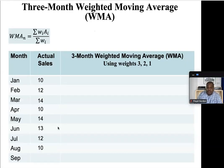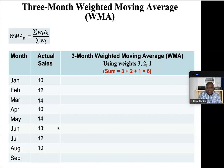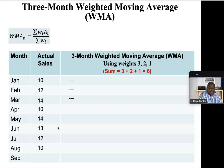We're going to do a three-month weighted moving average forecast using the weights three, two, and one. The first thing we need is the sum of the weights. Some people make the mistake of always using six as their sum of weights — not so. This total is six because three plus two plus one equals six. So first we add up the weights: sum of weights equals six. Since it's a three-month weighted moving average, we need three previous months. We can't do a forecast for January, February, or March. The first month we can forecast is April, because we have January, February, and March as the three previous months.